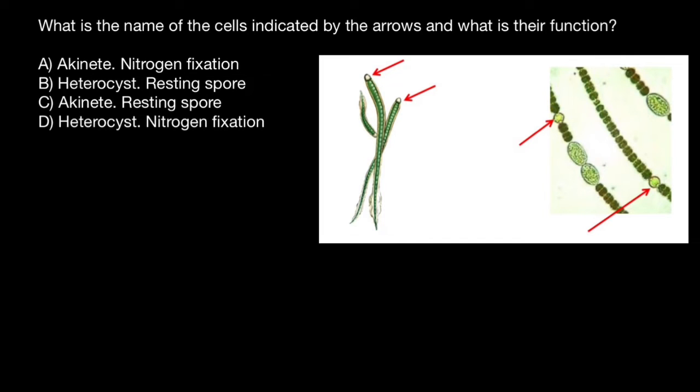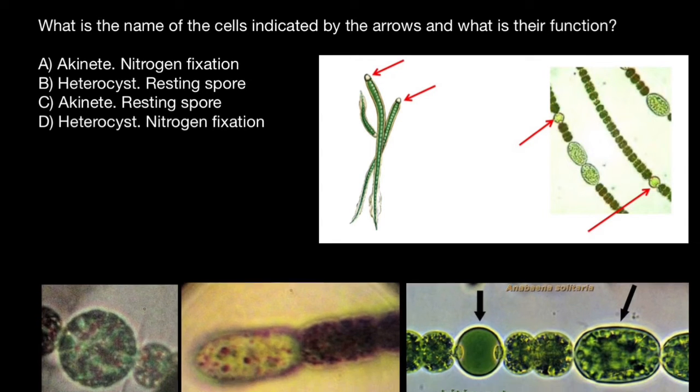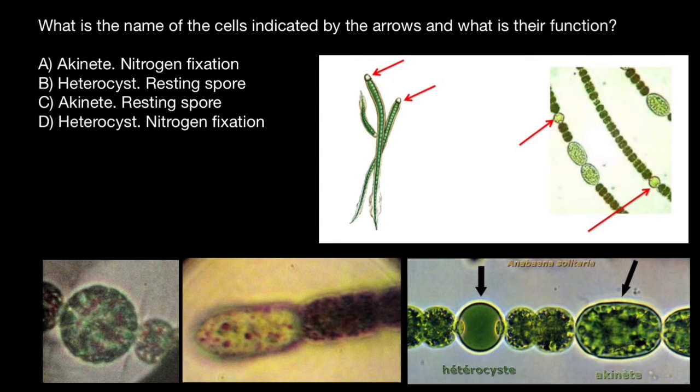Akinetes usually develop in strings, with each cell differentiating after another, and this occurs next to heterocyst if they are present. Akinetes' formation usually triggered by unfavorable conditions, such as temperature or absence of the nutrients, or insufficient light.